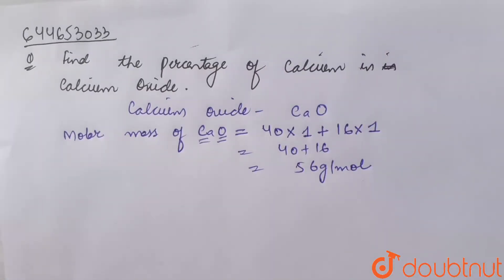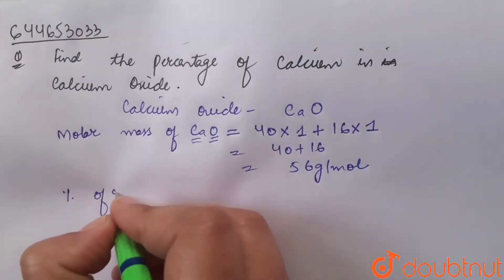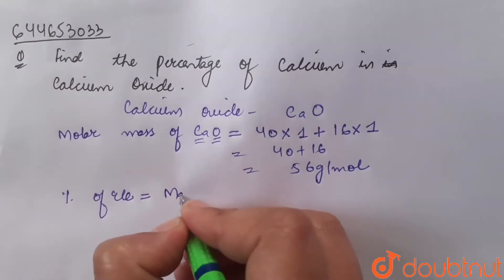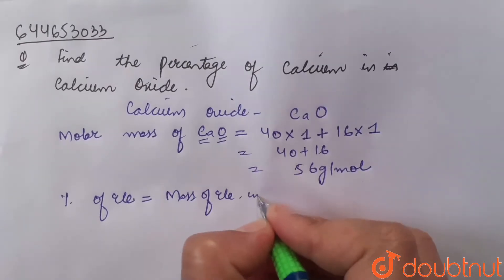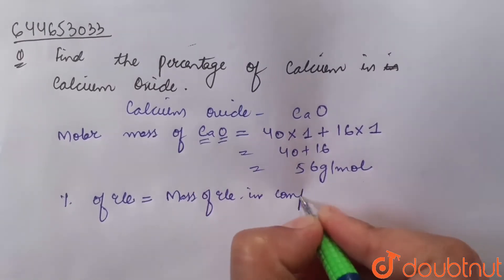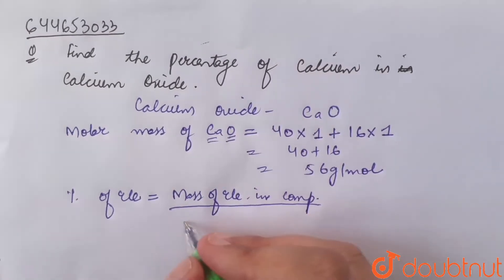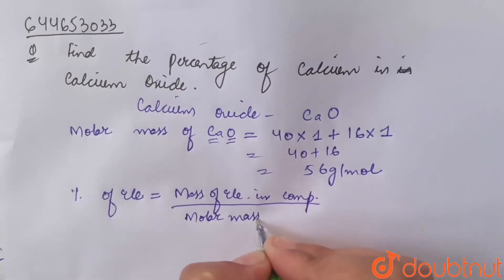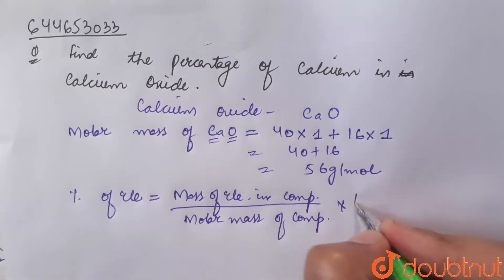Now we need to calculate the percentage of calcium in calcium oxide. The formula to find the percentage of an element is: percentage of element equals mass of element in compound divided by molar mass of compound, multiplied by 100. The molar mass of the compound is 56 grams per mole.